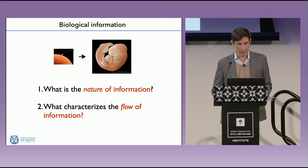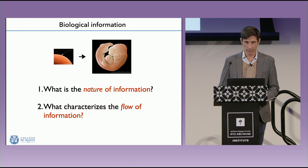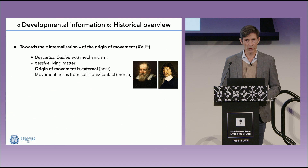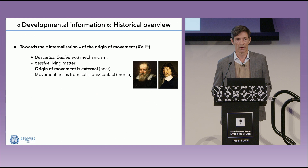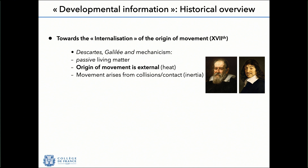The two questions now are: what is the nature of the information that guides the emergence of form, and second, what characterizes the flow of information that underlies the emergence of form? I'll begin with the nature of information, starting with a quick historical overview of how great scientists have been thinking about what we would refer to today as developmental information — certainly not called that in the 17th century.